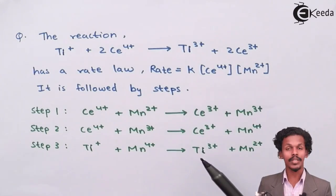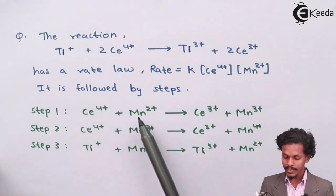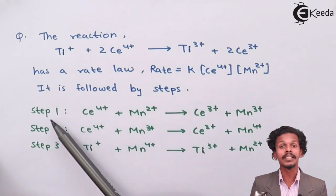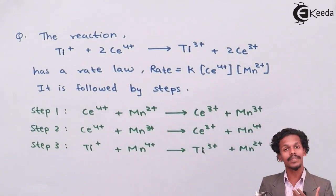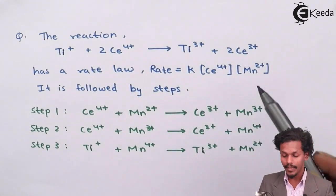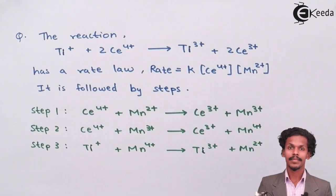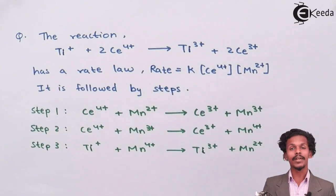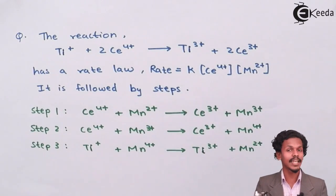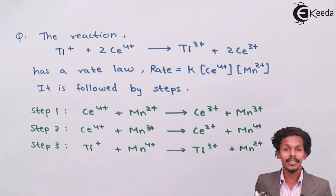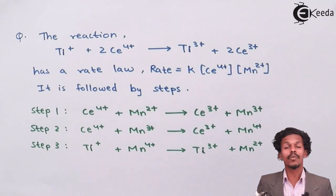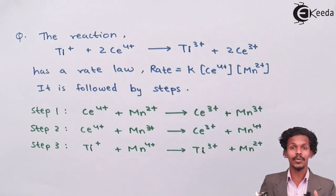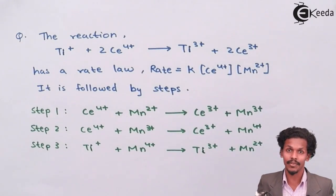The correct answer is that Ce(4+) and Mn(2+) are involved in step one, making step one the rate determining step — the slowest step. This is how we evaluate the rate law. We have now answered all three questions: what is the catalyst, what is the reaction intermediate, and what is the rate determining step. Thank you for watching — please subscribe to Ikeda channel.